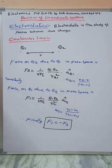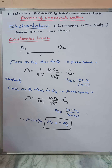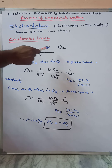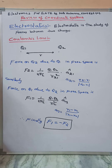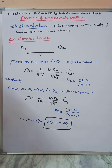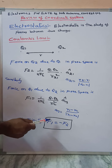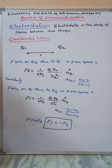Finally, the force on Q1 due to Q2 is F1, and the force on Q2 due to Q1 is F2. These two have the same magnitude but opposite directions, so F1 equals negative F2.